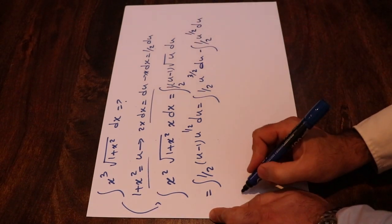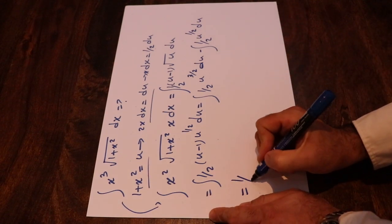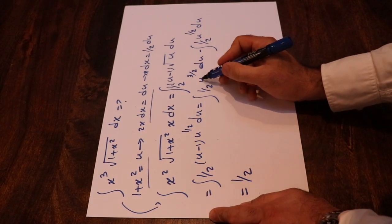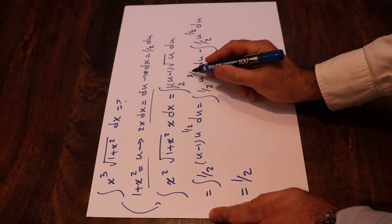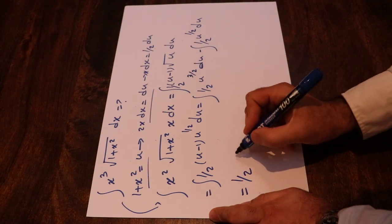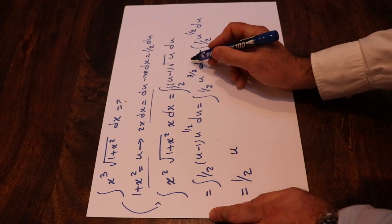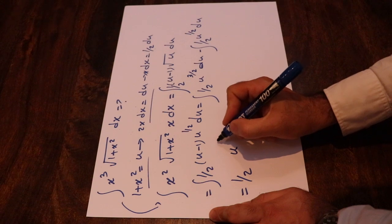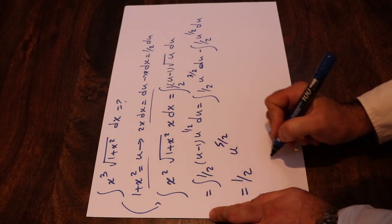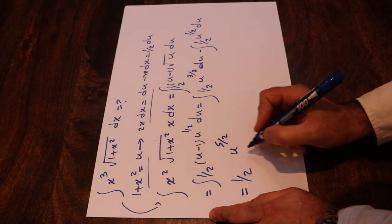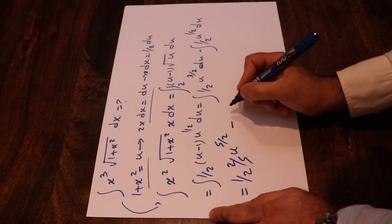And this integral is relatively straightforward. That will be equal to (1/2) times the integral of u^(3/2), which equals u^(5/2) divided by (5/2), that will be 2 divided by 5.